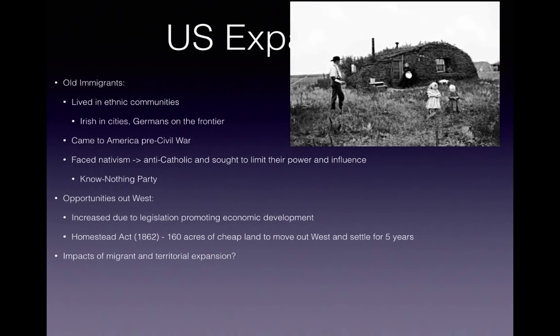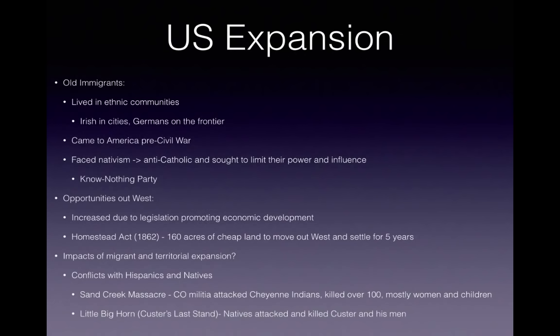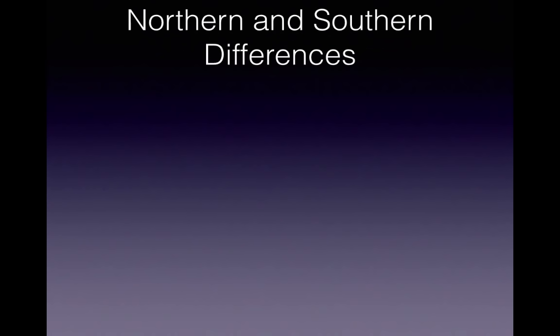What are the impacts of expansion, whether migrant or territorial? We have conflicts with Hispanics and natives. An example is the Sand Creek Massacre, in which a Colorado militia attacked the Cheyenne Indians and killed over 100 — most of them were women and children. We also have Little Bighorn, also known as Custer's Last Stand, in which the natives attacked and killed Custer and his men. This was one of the few successes in conflicts for the Native Americans.